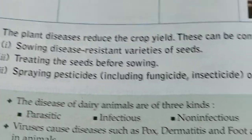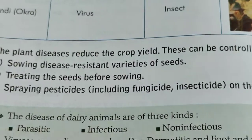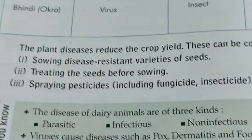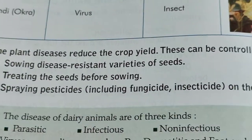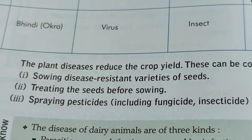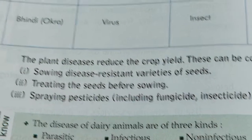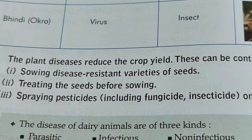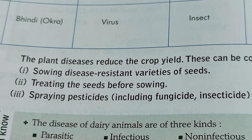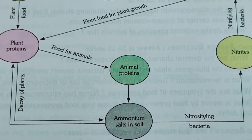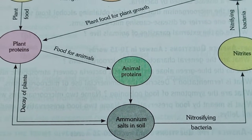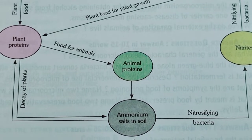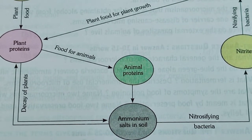These are the precautions and control measures to reduce plant diseases. Now we will move to our next topic: nitrogen fixation in plants. The molecular nitrogen from air cannot be utilized directly by living organisms. Therefore, the process of conversion of free atmospheric nitrogen into useful nitrogen compounds is known as nitrogen fixation.